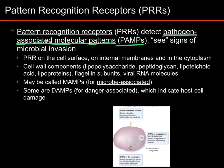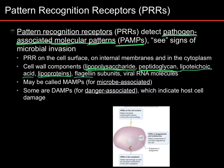Let's look at more examples. Lipopolysaccharide is found on gram-negative bacteria, not found on any of your cells. If you see some lipopolysaccharide floating around in your blood, it's probably a bad guy and you should eat it. Peptidoglycan — again, found on bacteria, not found on any of your cells. If you see some peptidoglycan, it's probably on a bad guy. Lipoteichoic acid, lipoproteins, flagellin, and viral RNA.